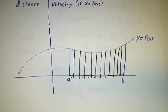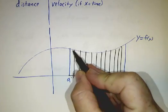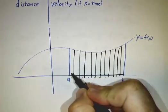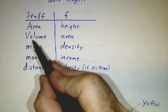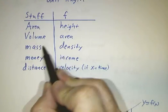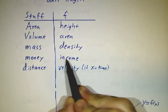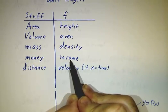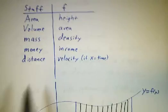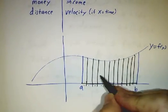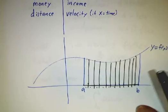Now, of course, for the area problem, we know that the area of this little strip is the height times the width. But if we were doing volume, we'd want the area times the width. And if we were doing mass, we'd want the density times the width. If we were doing money, we'd want the income rate times the amount of time. So in each case, the contribution is going to be f times delta x.